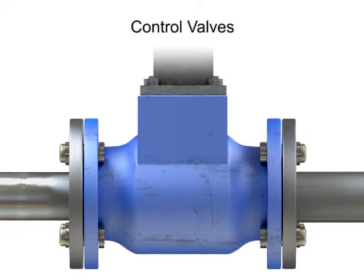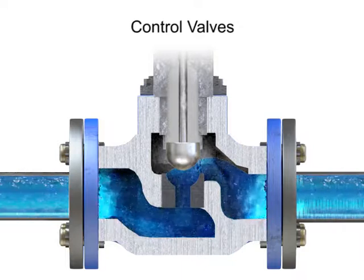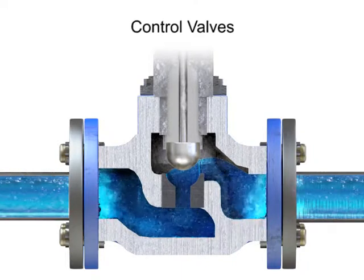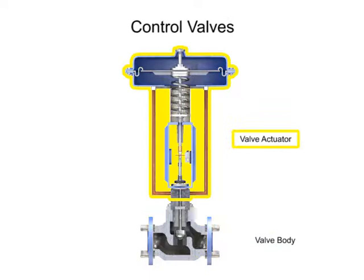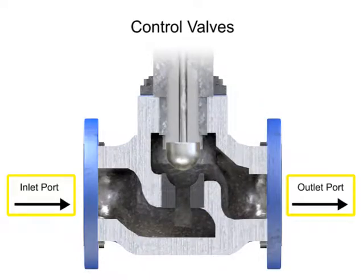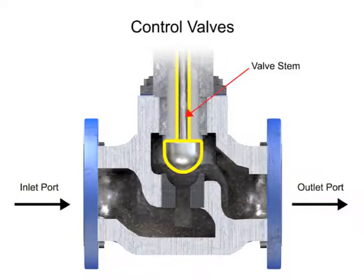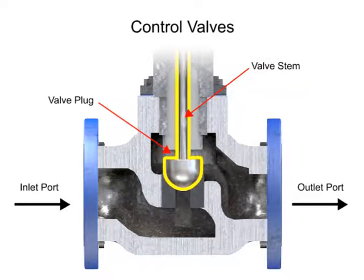Control valve actuators control fluid in a pipe by varying the orifice size through which the fluid flows. Control valves contain two major components: the valve body and the valve actuator. The valve body provides the fluid connections and a movable restrictor, comprised of a valve stem and plug that is in contact with the fluid that varies the flow. The valve actuator is the component that physically moves the restrictor to vary the fluid flow.